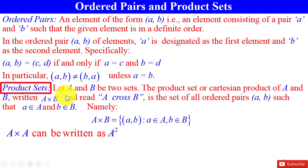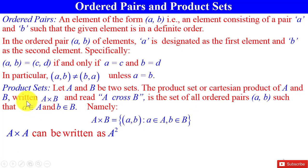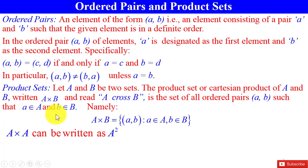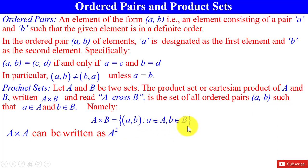Product sets: Let A and B be two sets. The product set or Cartesian product of set A and set B, written as A×B and read as 'A cross B', is the set of all ordered pairs (A, B) such that the first element A belongs to the first set A and B belongs to the second set B. Namely, A×B is the collection of ordered pairs (a, b) such that a belongs to A and b belongs to B.